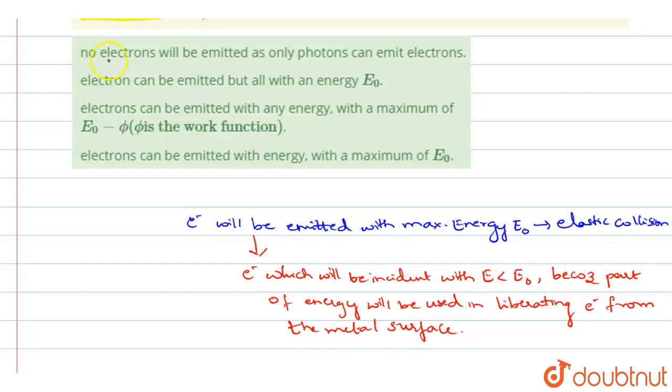So you can see here, no electrons will be emitted as only photons can emit electrons - no, electrons can be emitted but all with energy E0. Electrons can be emitted with any energy with a maximum of E0. So that is what we have told here. So option D will be the right answer.